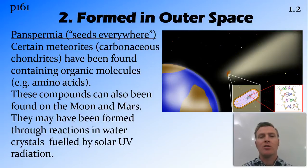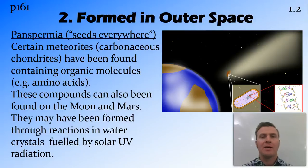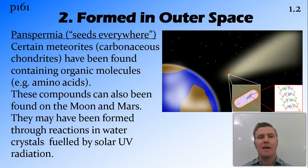We're not sure exactly where these compounds are formed — they could be formed on the meteorite due to solar radiation, or perhaps on another planet that exploded somewhere else in the solar system. There is also some evidence, though it is up for debate, that fossilised remains of bacteria and other microscopic organisms have been found in some meteorites and on Mars.